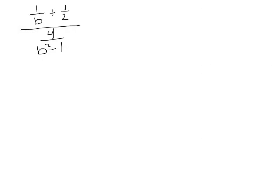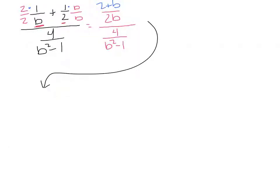For this complex fraction, I don't have to do quite as much work. The bottom is already one big fraction. I just need to combine the numerator at the top. I'm going to need a 2 and a b in my least common denominator, so I want 2b in the denominator. The first fraction needs to be multiplied by 2 over 2 and the second fraction by b over b. The bottom is already a fraction, so it stays as 4 over (b squared minus 1). In my numerator, I end up with 2 times 1 plus 1 times b, which is 2 plus b.